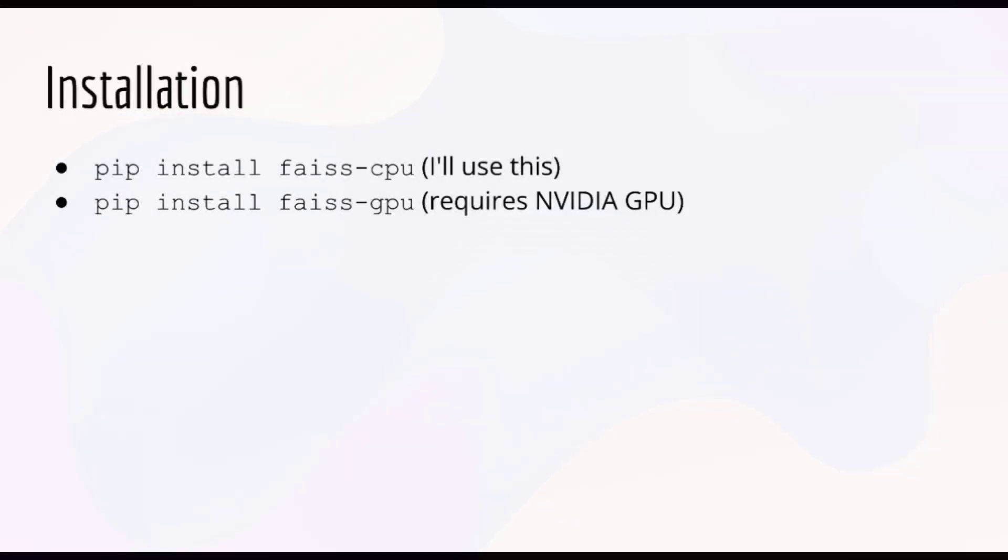Okay, so let's get into the hairy details of how to use Facebook's similarity search library. To begin, you'll want to install the library using the usual pip install command. Note that there are two versions: faiss-cpu and faiss-gpu. You'll need an NVIDIA GPU if you want to use the GPU version. Since I'm on a Mac, I'll be using the CPU version in this course. But if you're on Colab or you have a local NVIDIA GPU, then please feel free to try out the GPU version.